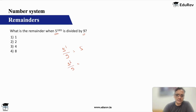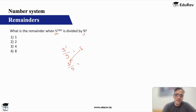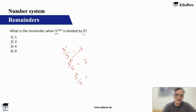Five to the power one divided by nine is five. For five to the power two divided by nine, don't compute five squared directly — just do five into five, which is 25. 25 divided by nine gives remainder seven. Then five cubed divided by nine: don't do five cubed, do seven into five. Seven into five is 35, and 35 divided by nine gives remainder eight.